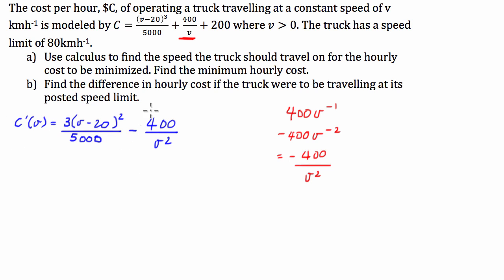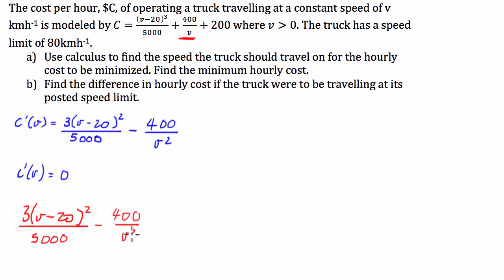And at the minimum cost, the cost will be a minimum when C dash of V is equal to zero. So basically what we would do, if we're in an exam, what we're going to do is we're going to stick this into a calculator with graphing capabilities, or solving functions, because this question, I'm looking at it on the exam paper, is worth not very many marks. So basically what you would do here is we would type into the calculator, we would go 3 bracket V minus 20, all squared over 5000, minus 400 over V squared equals zero, and then we're going to solve, ask the calculator to solve for V.